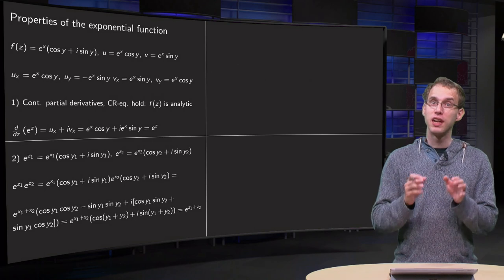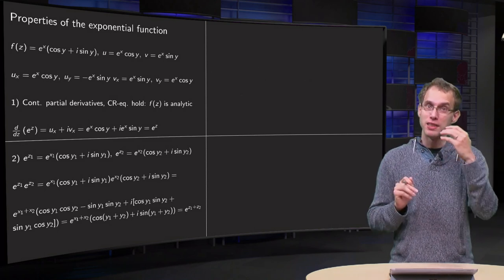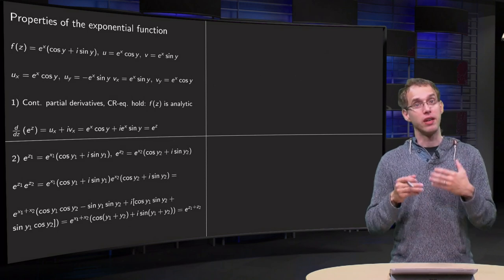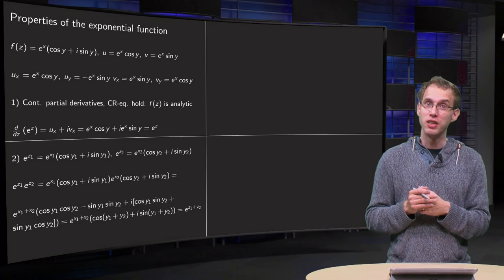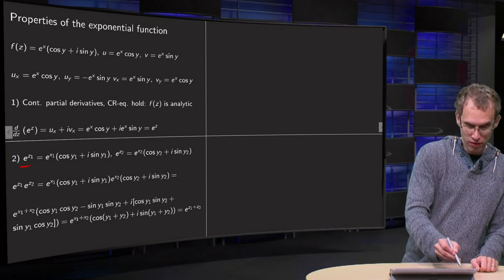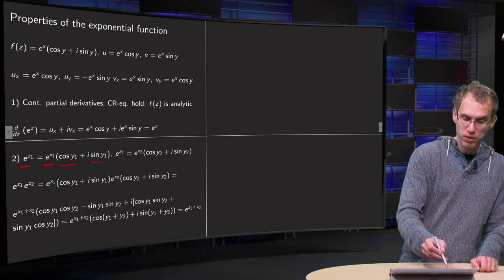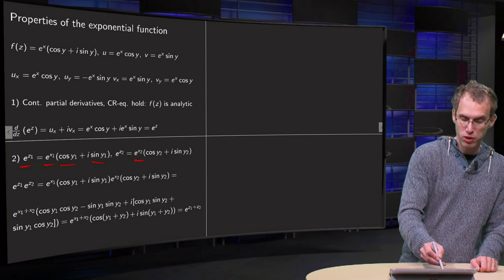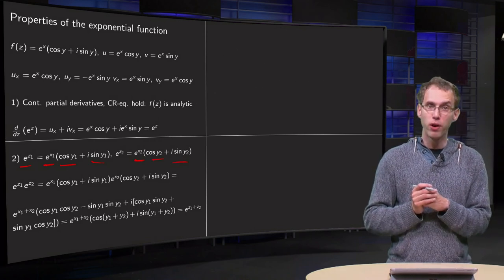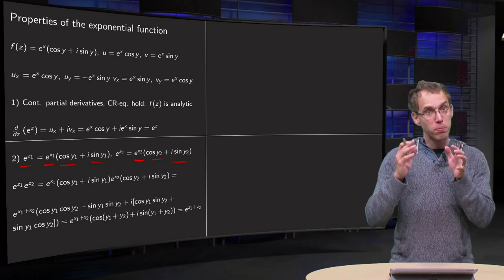What about properties like e to the power z1 plus z2 — can you split that up as e to the power z1 times e to the power z2? We can try: use the definition and see whether this property is still satisfied. So e^z1 = e^x1 (cos y1 + i sin y1), and similarly e^z2 = e^x2 (cos y2 + i sin y2). We take the product of the two and see whether we get e^(z1+z2).